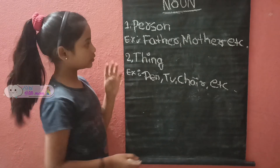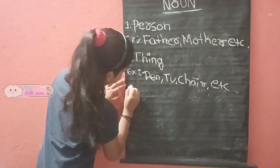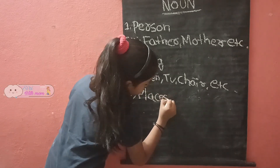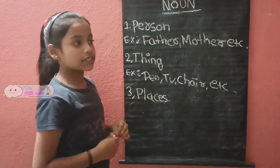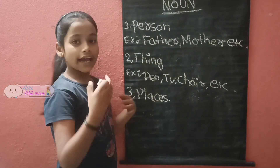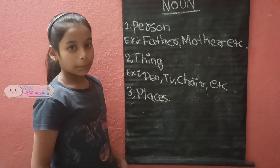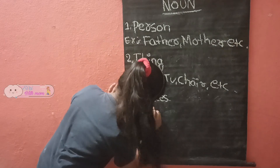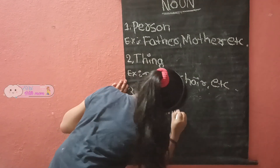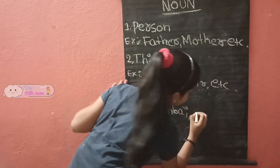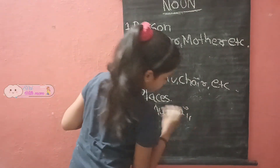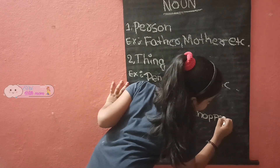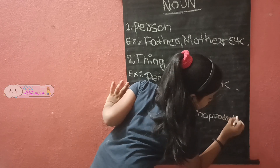Third one: places. Places means Karinagar, Hyderabad, Mumbai — these are places. Examples: Mumbai, Chabadandi, etc.